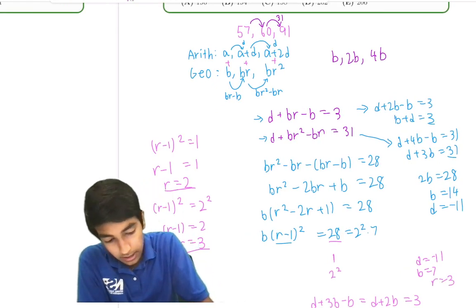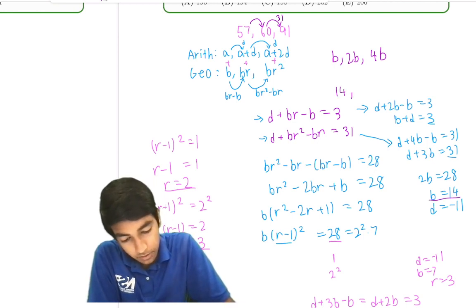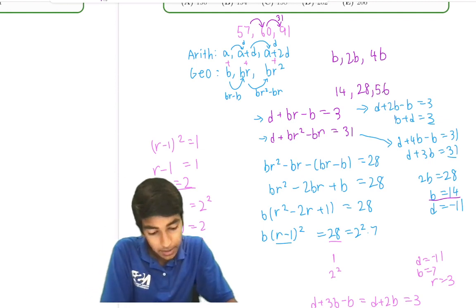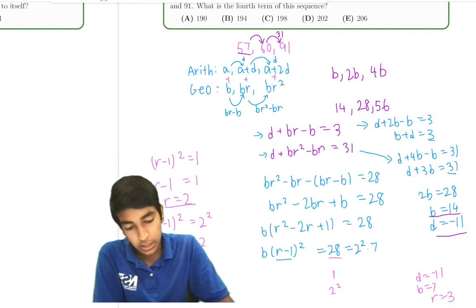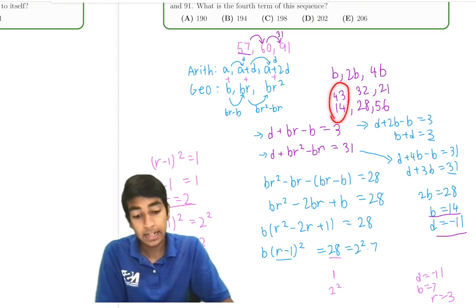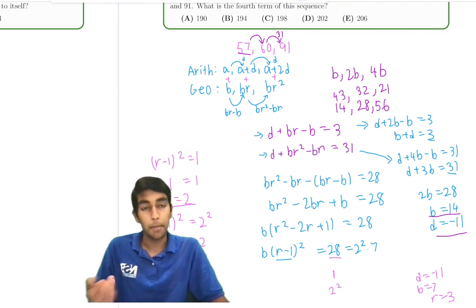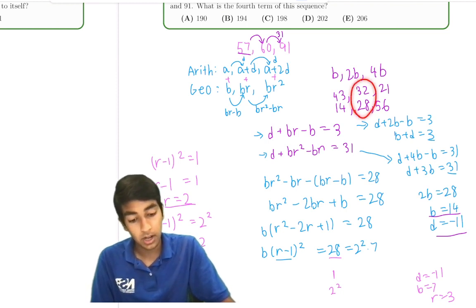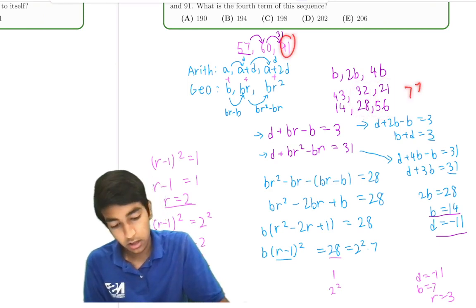So in the first case, we have b is 14 and r is 2. So the geometric sequence is 14, 28, 56. And the arithmetic sequence, for the first term to sum to 57, the first term must be 43. So 43, 32, and then the next term will be 32 minus 11, 21. The first term is 57, that's a check. The second term sums to 60, so that's a check mark. But the third term sums to 77, not 91. So this case doesn't work.